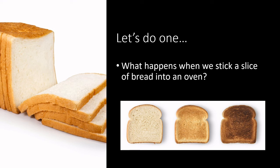The moisture content is going to decrease as well. So it's going to go from being soft and malleable into a crispy, crunchy texture. The temperature is going to be higher so that it will be amenable for spreading nice things like butter or jelly.